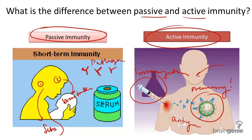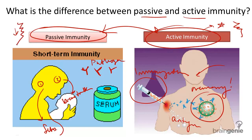So in summary, the difference between passive and active immunity can be compared to the difference between actively creating your own memory cells, which takes a lot of energy, or passively receiving the antibodies that have already been created, which takes less energy.